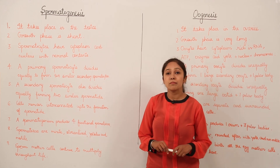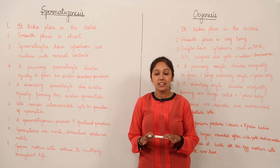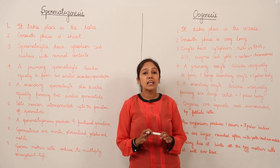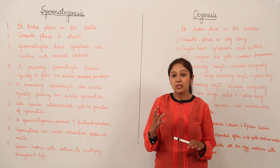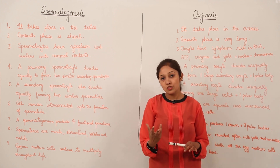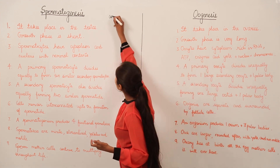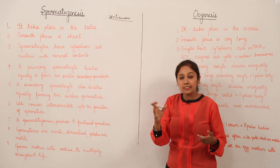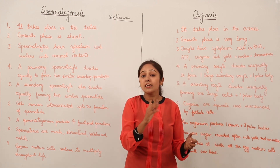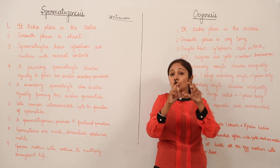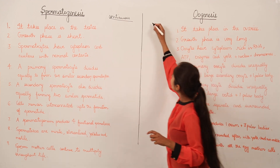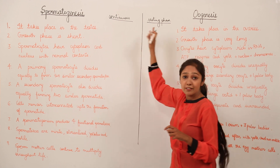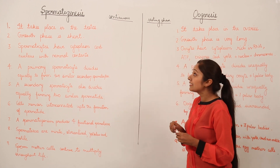As we have discussed the processes of spermatogenesis and oogenesis in great detail, let us now evaluate the major points of differences between these two processes. Remember that spermatogenesis is a continuous process — a human male produces sperms throughout his life. In the case of oogenesis, there are phases of longer duration with long resting phases, so oogenesis is not continuous.